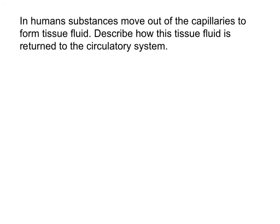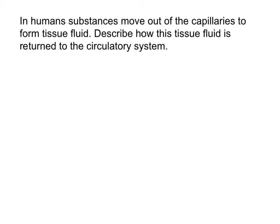The next question: in humans, substances move out of the capillaries to form tissue fluid. Describe how this tissue fluid is returned to the circulatory system. This question is worth three marks, therefore the examiner is looking for three points. The examiner remarks say that candidates obtaining a single mark often did so by referring to the role of the lymphatic system in returning tissue fluid to the circulatory system. However, a very significant number of candidates wasted time by explaining the formation of tissue fluid at the arterial end of the capillary.